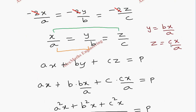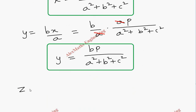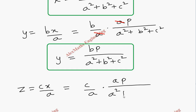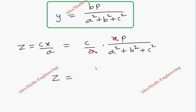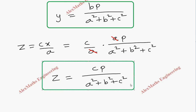Similarly, z equals c times x by a. Substituting x: z equals c by a into ap by (a square plus b square plus c square). Cancelling a, we get z equals cp by (a square plus b square plus c square). So we have obtained the values of x, y, and z.